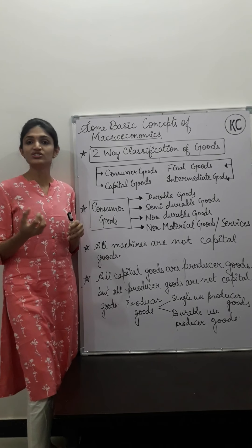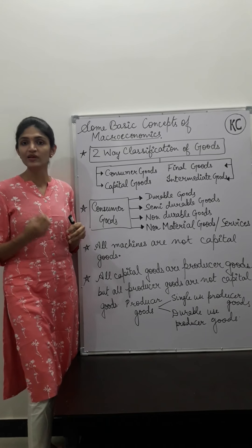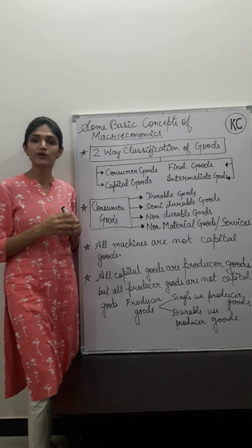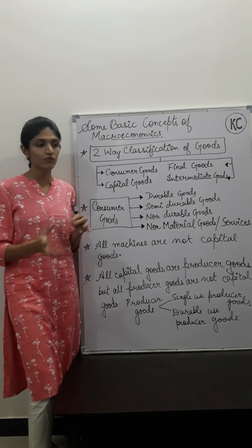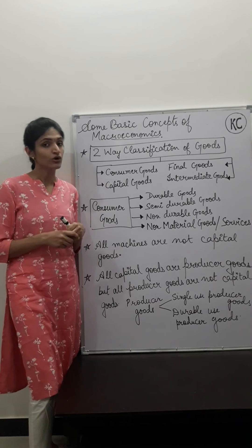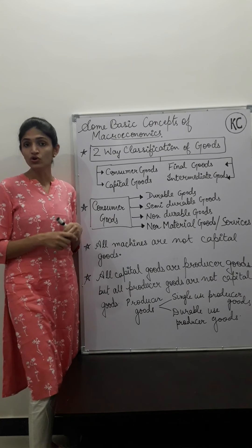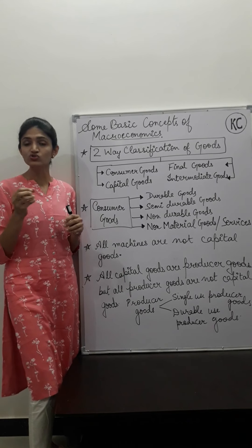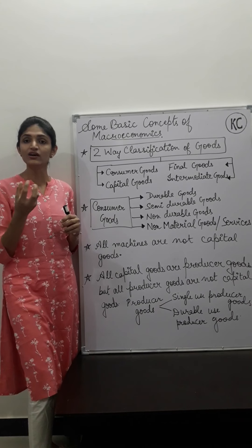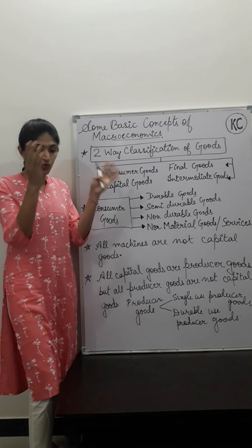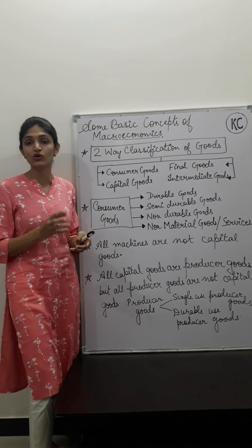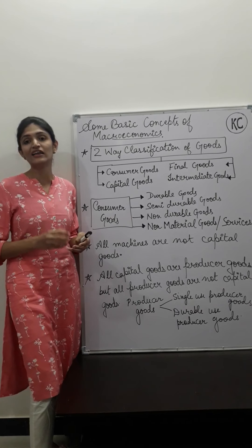For example, in machinery there are nuts, bolts, and screws that are also used in production. But are they capital goods? No. Why? Because their economic value is very low. Nuts, bolts, and screws have a very low economic value. But if you talk about the machinery itself, that is a capital good, because its economic value is high.